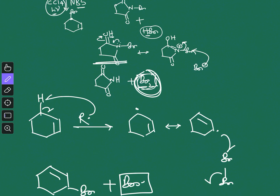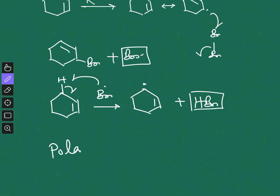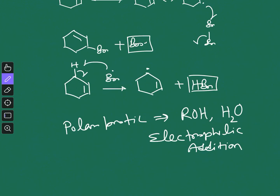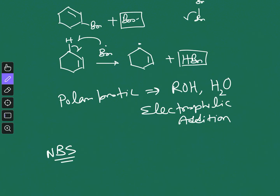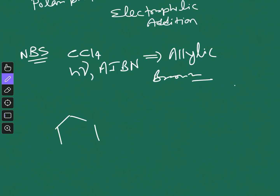The summary of this video: if you do the NBS reaction in the presence of a polar protic solvent like ROH or H2O, you will get electrophilic addition. If you do the same reaction with NBS but in a solvent like CCl4 under light irradiation or with a radical initiator like AIBN, then you will get allylic bromination.